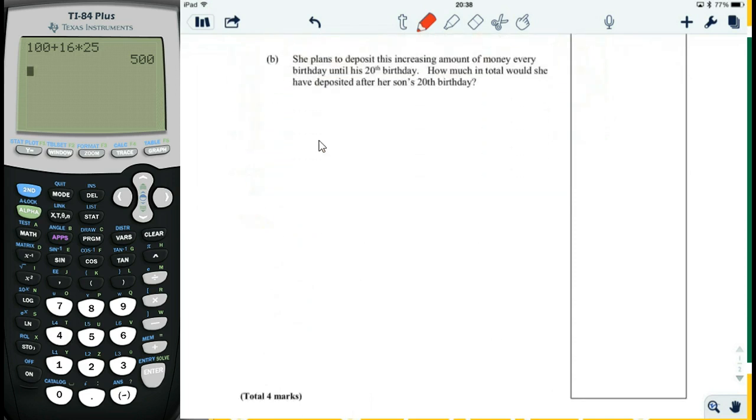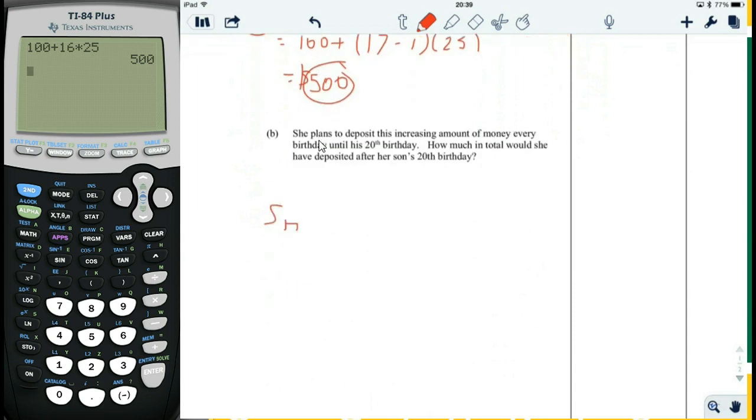She plans to deposit this increasing amount of money every birthday until his 20th birthday. So how much in total would she have deposited after her son's 20th birthday? Now, be careful. I know that you want to do S17 because we just did U17, but you can see here that they don't want S17. They want S20. They want to know how much they're going to deposit from the first birthday all the way to the 20th birthday because the key word here is total.